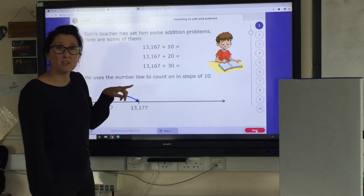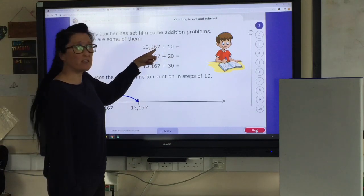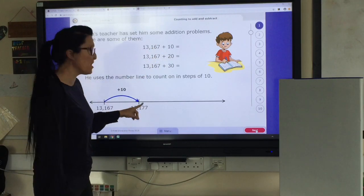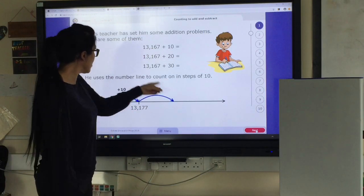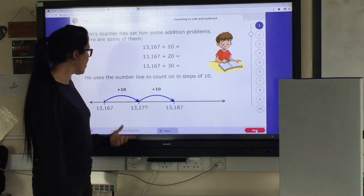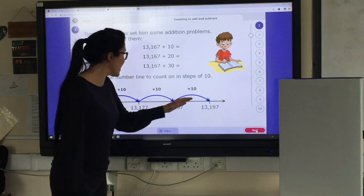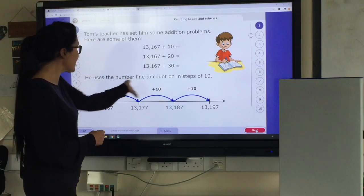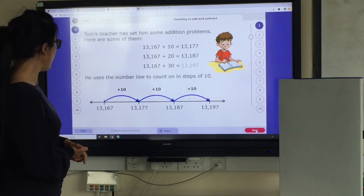Just like I said, you're using your place value knowledge there to add on one 10 into your 10's column. So that 10's column has gone up by 1 from 6 to 7. So if you want to add on 20, you add on 2 lots of 10 and you end up at 13,187 and 3 lots of 10, 30, you end up at 13,197. Hopefully that's really clear. But breaking it down on number line in steps of 10. Let's move on.